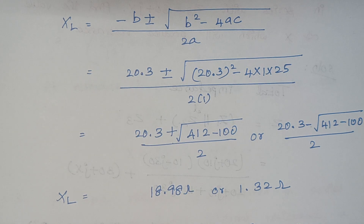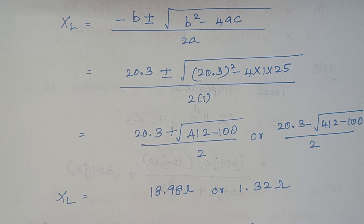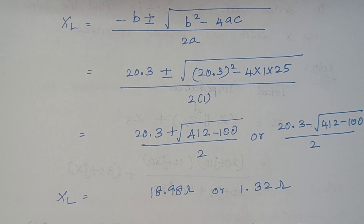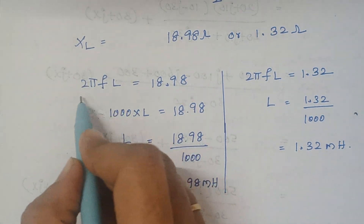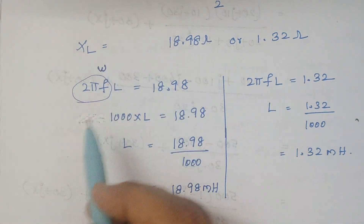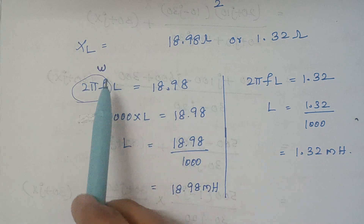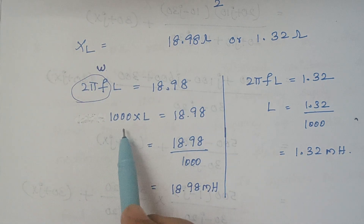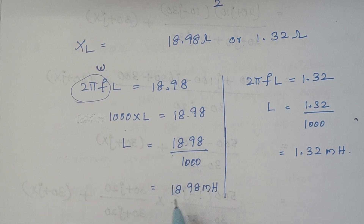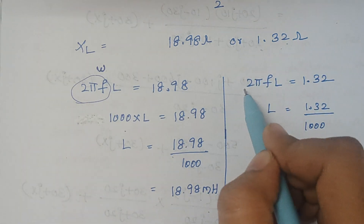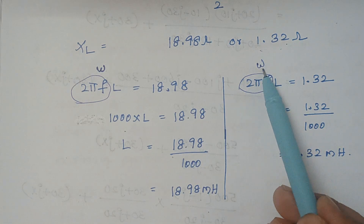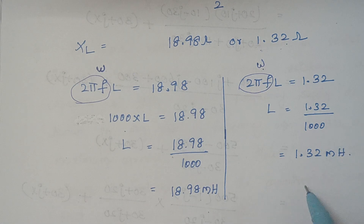We were asked to find L, not XL. Since XL = omega times L, and omega is 1000 radians per second, substituting gives the first value of inductance as 18.98 millihenry. Similarly, using XL = 1.32 ohms with omega = 1000, the second value of inductance is 1.32 millihenries.